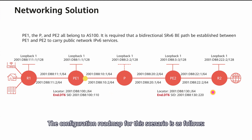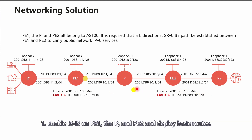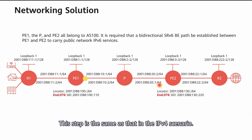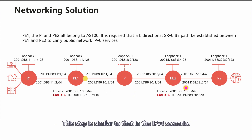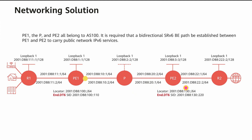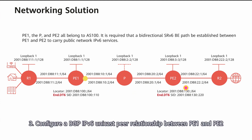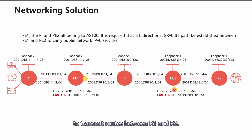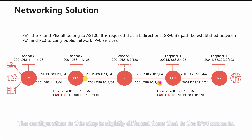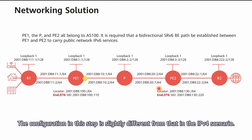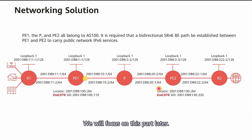The configuration roadmap for this scenario is as follows. First, enable AS100 on PE1, the P, and PE2, and deploy basic routes — this step is the same as in the IPv4 scenario. Second, configure an SRV6 BE path between PE1 and PE2, which is also similar to the IPv4 scenario. Third, configure a BGP-IPv6 unicast peer relationship between PE1 and PE2 to transmit routes between R1 and R2. The configuration in this step is slightly different from that in the IPv4 scenario, and we'll focus on this part later.